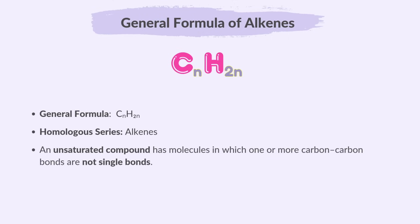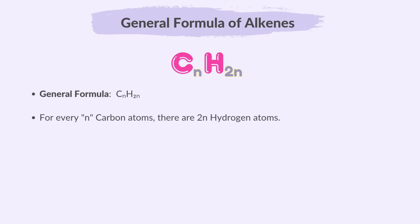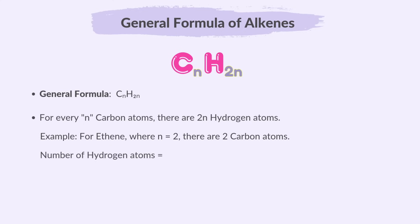The general formula of alkenes is CnH2n. An unsaturated compound has molecules in which one or more carbon-carbon bonds are not single bonds. Alkenes are unsaturated hydrocarbons that contain at least one carbon-carbon double bond. For every n carbon atoms, there are 2n hydrogen atoms. For example, for ethene where n=2, there are 2 carbon atoms. The number of hydrogen atoms is 2(2) = 4, so ethene is C2H4.